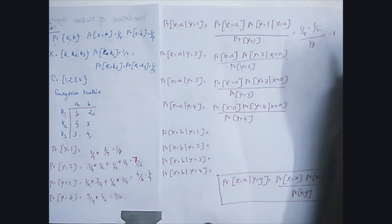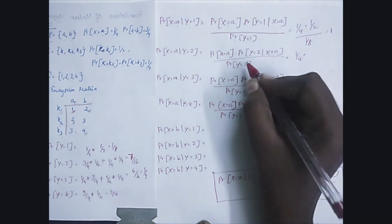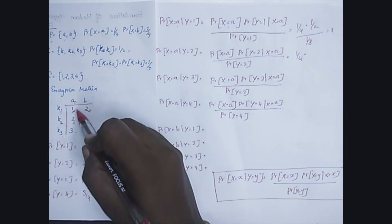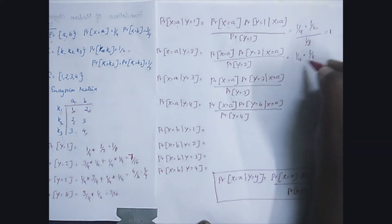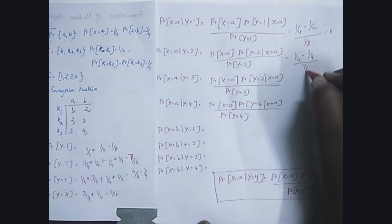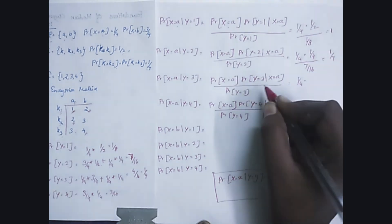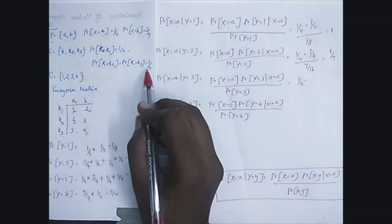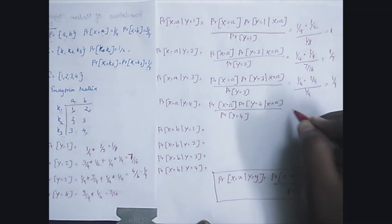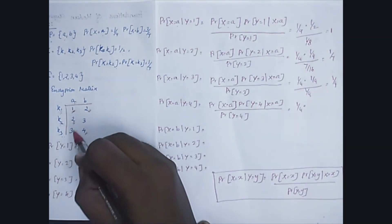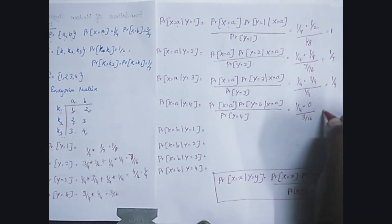For P(A | Y=2): P(A) × P(Y=2 | X=A) / P(Y=2) = (1/4) × (1/4) / (7/16) = (1/16) / (7/16) = 1/7. For P(A | Y=3): when key K3 gives output 3 for A, result is (1/4) × (1/4) / (1/4) = (1/8) / (1/4) = 1/4. Wait — result is 1/8 ÷ 1/4 = 1/4. For P(A | Y=4): there is no output 4 in column A, so it is 0 / (3/16) = 0.